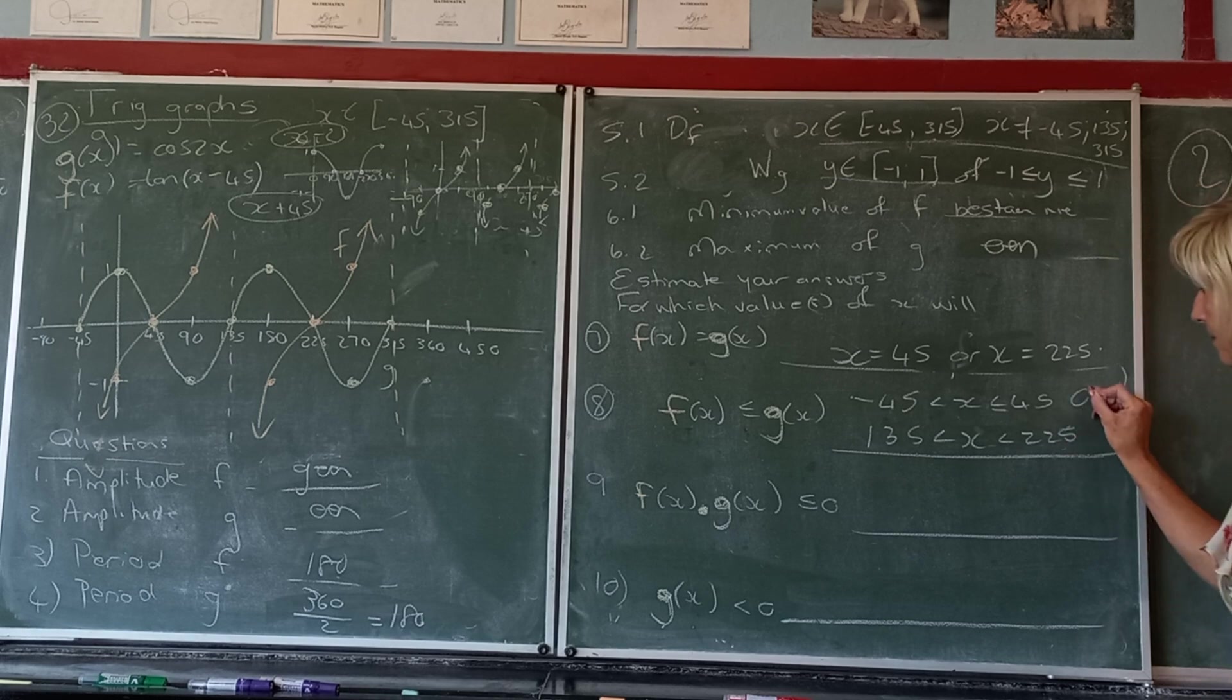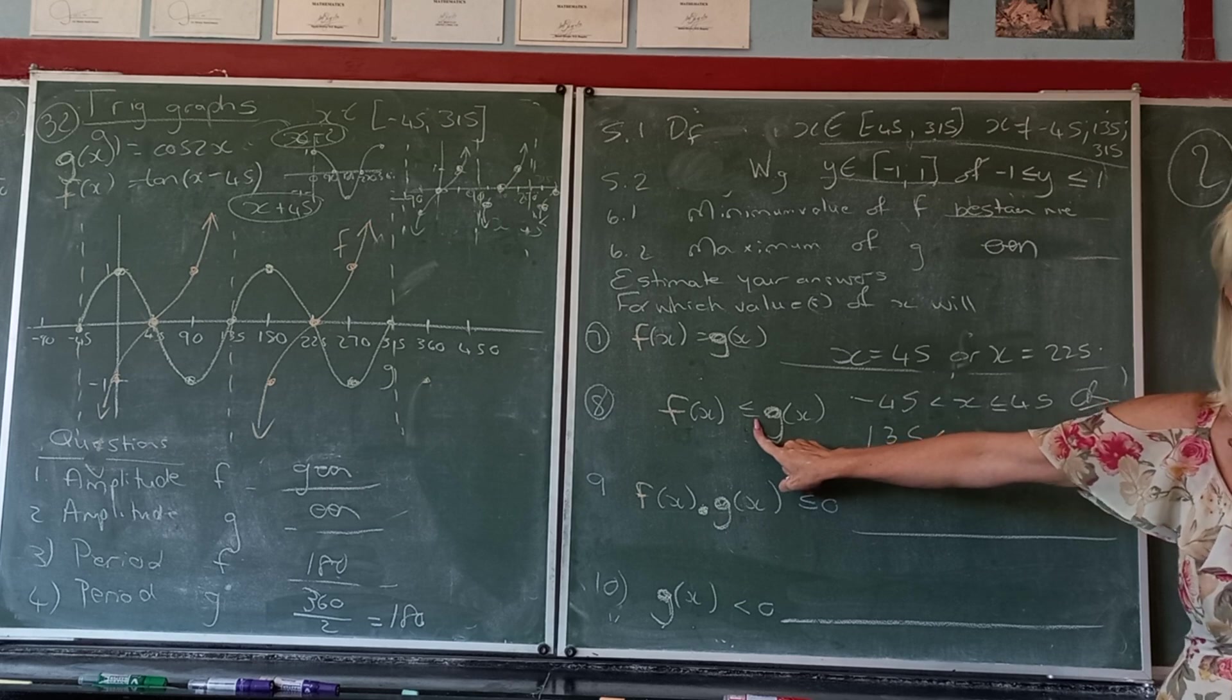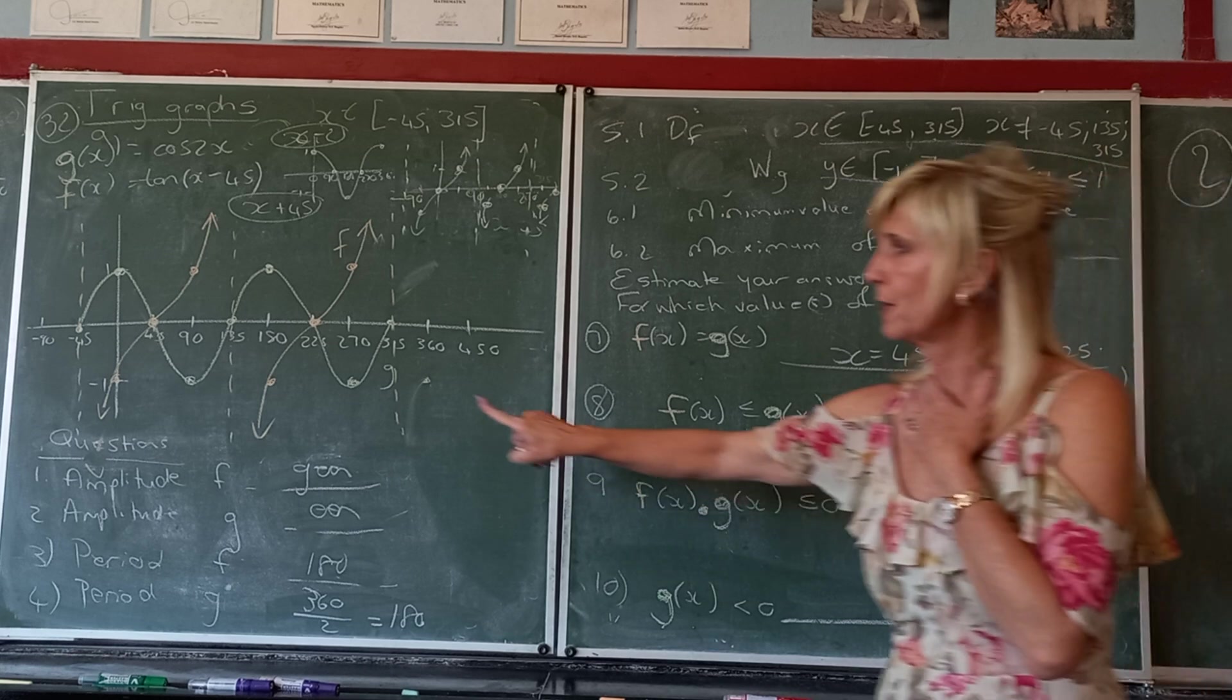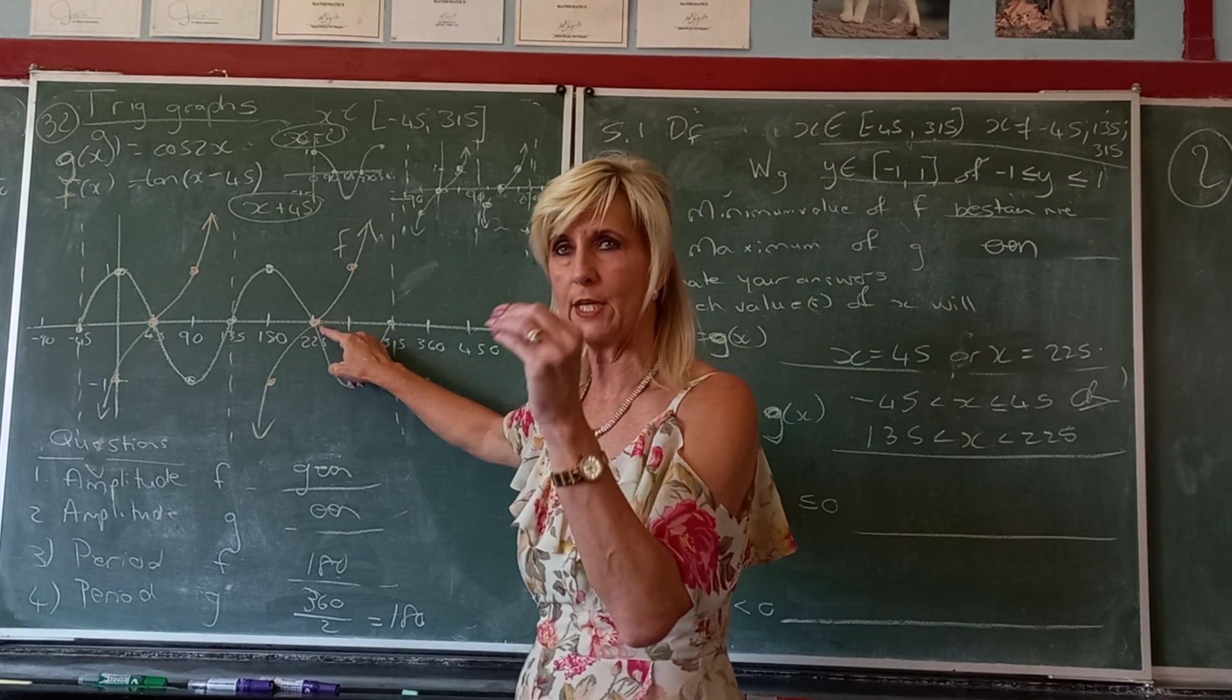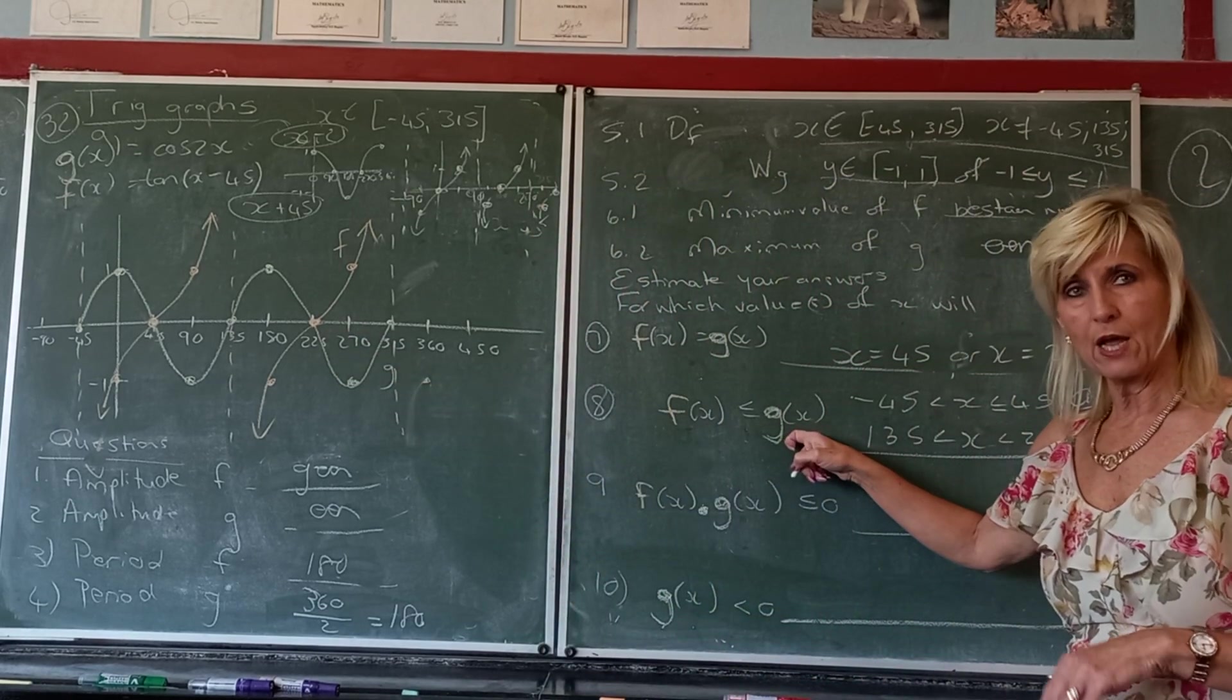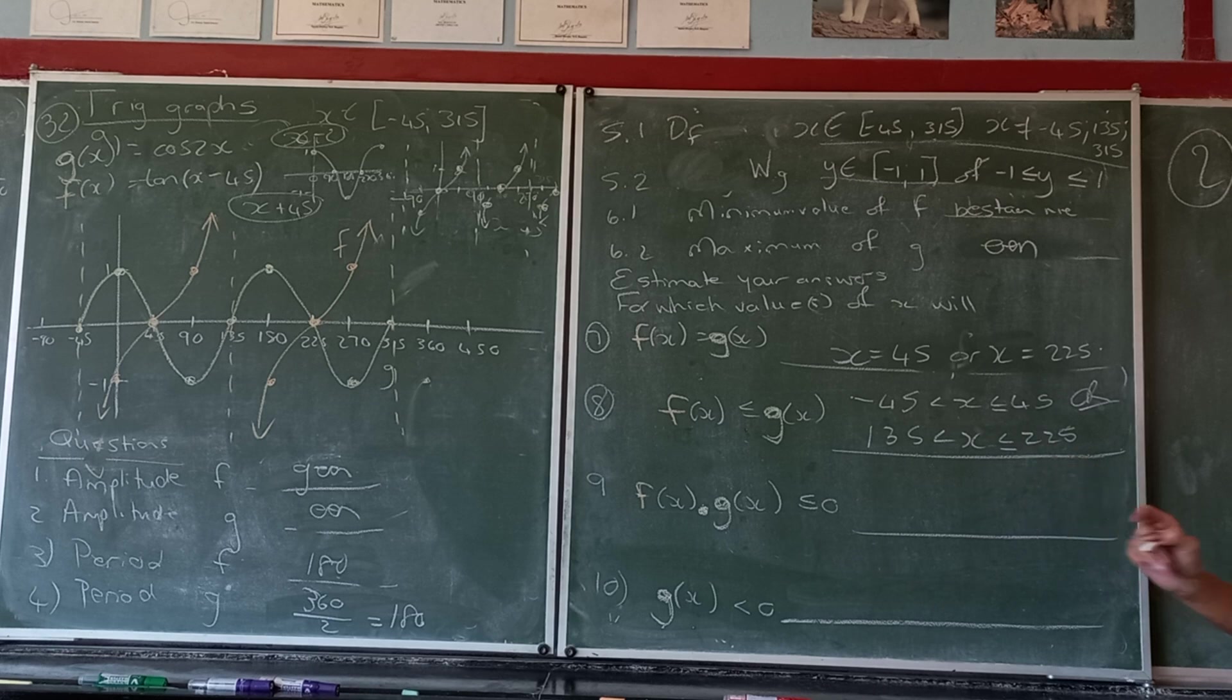So it's between 135 and 225. And again we write, or now we should be able to include everything, but we don't because there's an asymptote. Do we include the 135? No, because it's an asymptote. But the 225 we do because there they are actually equal. The question says where is the orange below the yellow or equal? The equal is there at 225. Excluded. Included. Very specific.